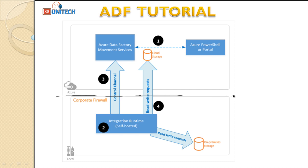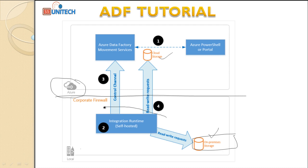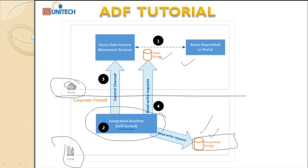For implementing the self-hosted IR — here we can see the corporate firewall on one side and the cloud on the other. The data available in your on-premises storage needs to move to the cloud. We are required to have the self-hosted integration runtime installed locally. By using this self-hosted IR we communicate between the on-premises environment and the cloud, and we can move data in both directions.